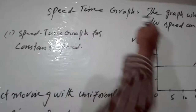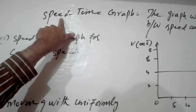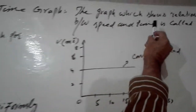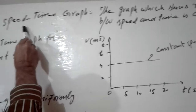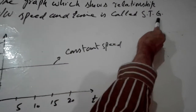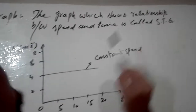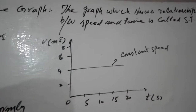The speed-time graph is basically the graph which shows the relationship between speed and time. There are two physical quantities: speed and time. The graph which shows the relationship between only these two physical quantities is called the speed-time graph, written in short form as S-T-G.